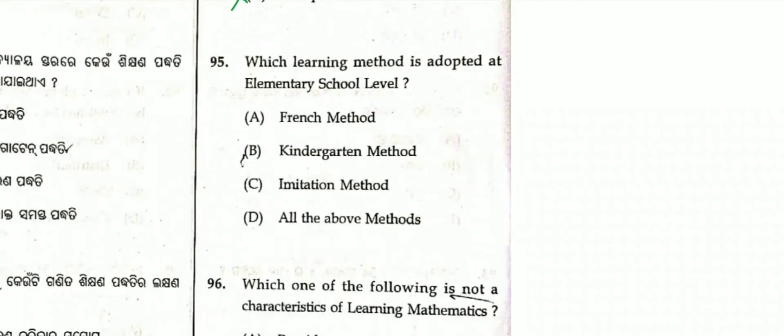Question number 95: Which learning method is adapted at elementary school level? The options are French Method, Kindergarten Method, Imitation Method, or all of the above. The answer is Kindergarten Method, as elementary school level means Class 1 to Class 8.